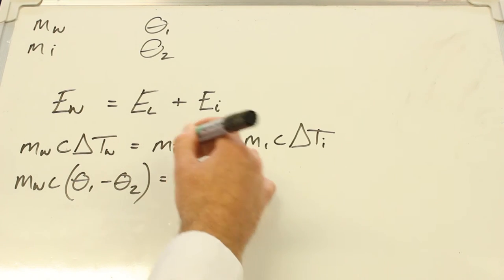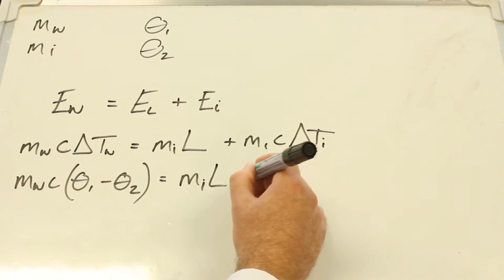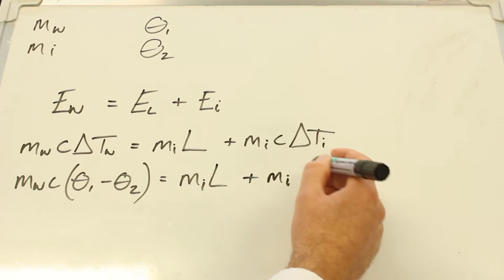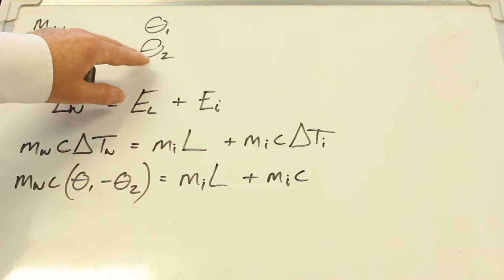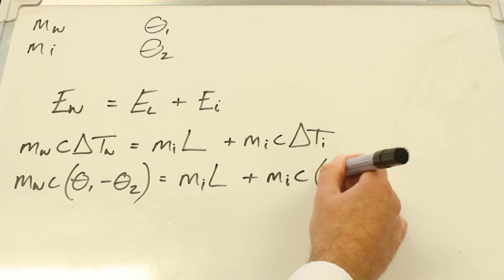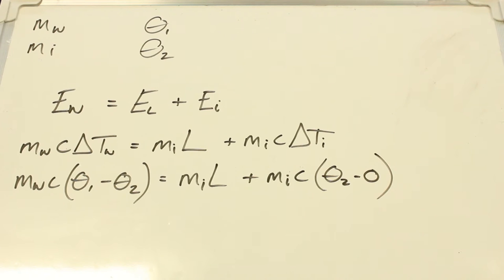This part, that's the ice times that's our target, that's our specific latent heat we're trying to work out, plus the mass of the ice times by the specific heat capacity of water times by the temperature change for the ice, which is going to be the final temperature. And you could say it's the final temperature take away zero because we knew the ice was at zero initially because it was an ice and water mixture, and that's actually probably our most accurate measurement in the whole thing.